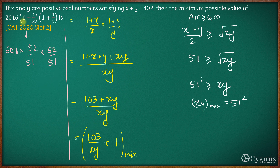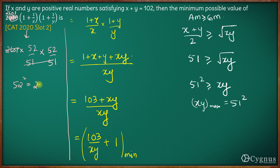So the expression becomes 2601 into (52/51) into (52/51). I am sorry — the outer constant is not 2016, it is 2061. Actually, this term is 2601, which is 51 squared. So 51 squared cancels with the denominator 51 squared, and we are left with 52 squared, which is 2704. Therefore, the least possible value of this expression is 2704.